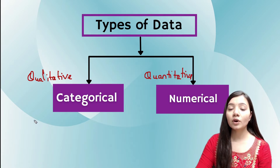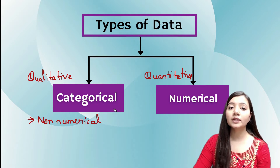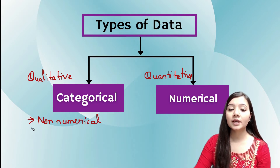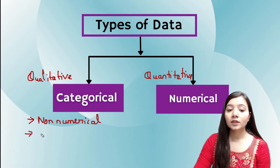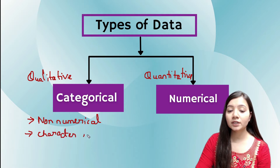Now categorical data are the data that are non-numerical. So all the data that is non-numerical is called categorical data. You can say that all the data present in the form of characters or strings will be called as categorical data.